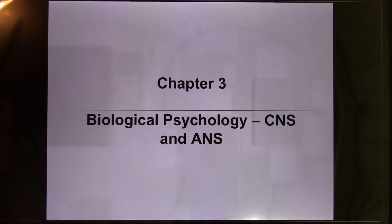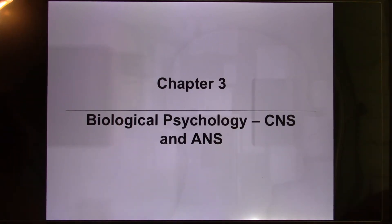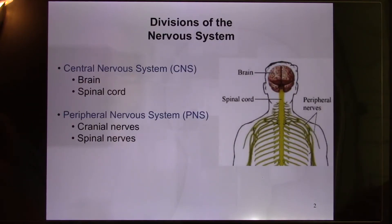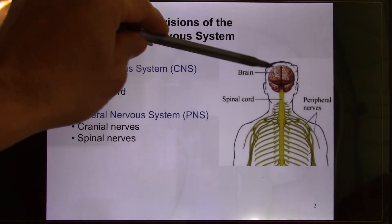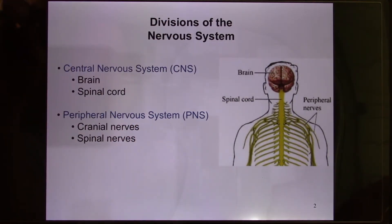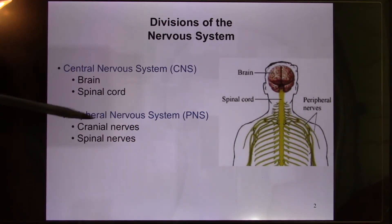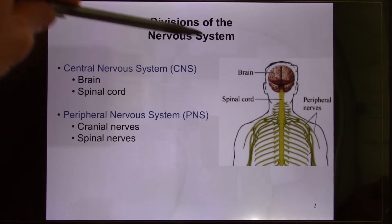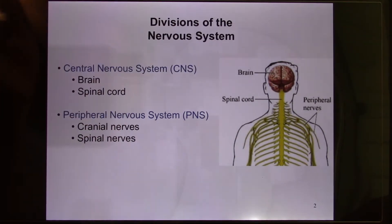We're in part 3 of chapter 3, covering the central nervous system and also the autonomic nervous system. The central nervous system includes the brain and the spinal cord, and your peripheral nervous system has the nerves. We're mainly focused on the central nervous system today.